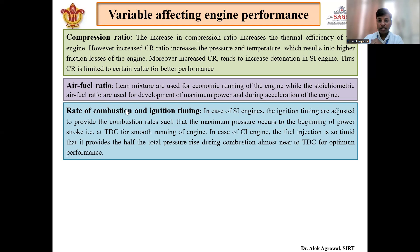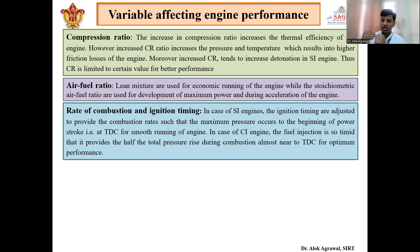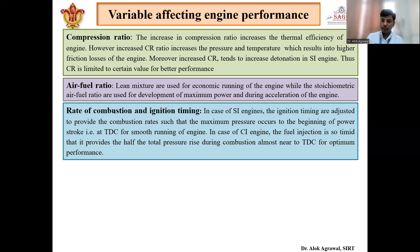Next is rate of combustion and ignition timing. In the case of an SI engine, the ignition timing can be adjusted to provide a combustion rate such that maximum power of the cycle takes place at the beginning of the power stroke. If maximum power takes place when the piston is already halfway down from TDC to BDC, it is not much use. So ignition timing is adjusted so that maximum power occurs when the piston is just starting to move from TDC to BDC.